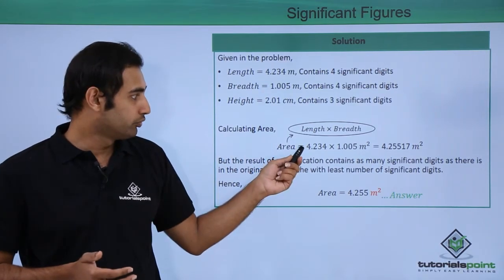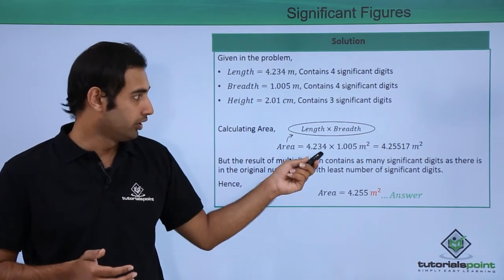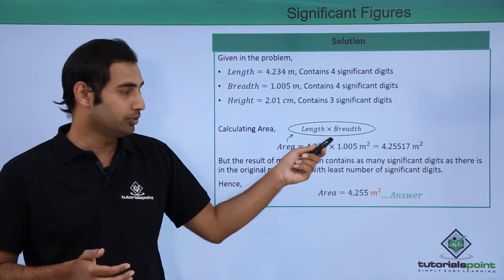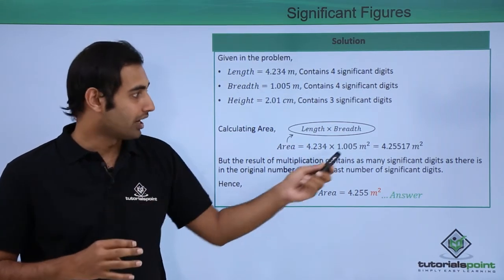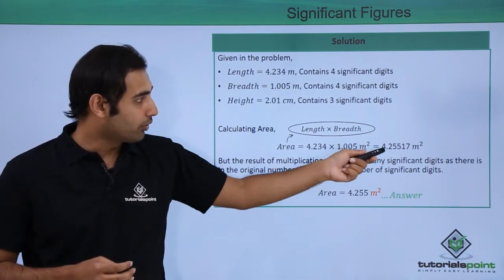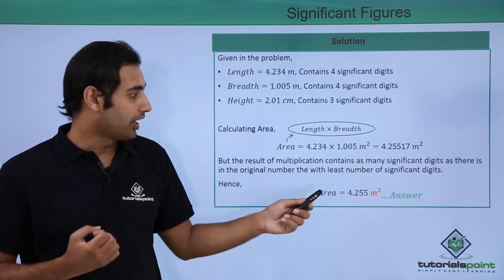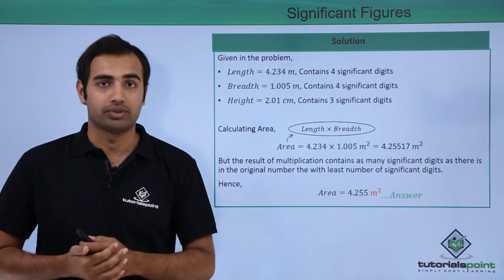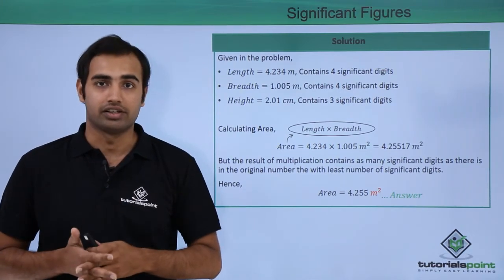So among the two numbers 4.234 and 1.005 both contain only 4 significant digits. The answer shall also contain only 4 significant digits. So over here I have to round it off to 4 significant figures and it is simply 4.255 meter square. This is the area that we calculate.